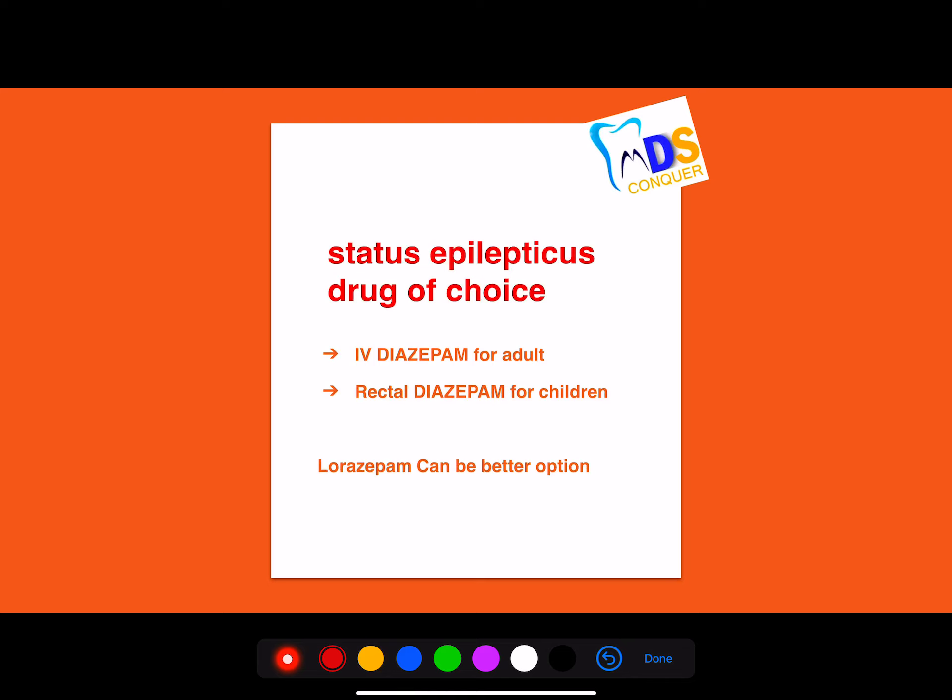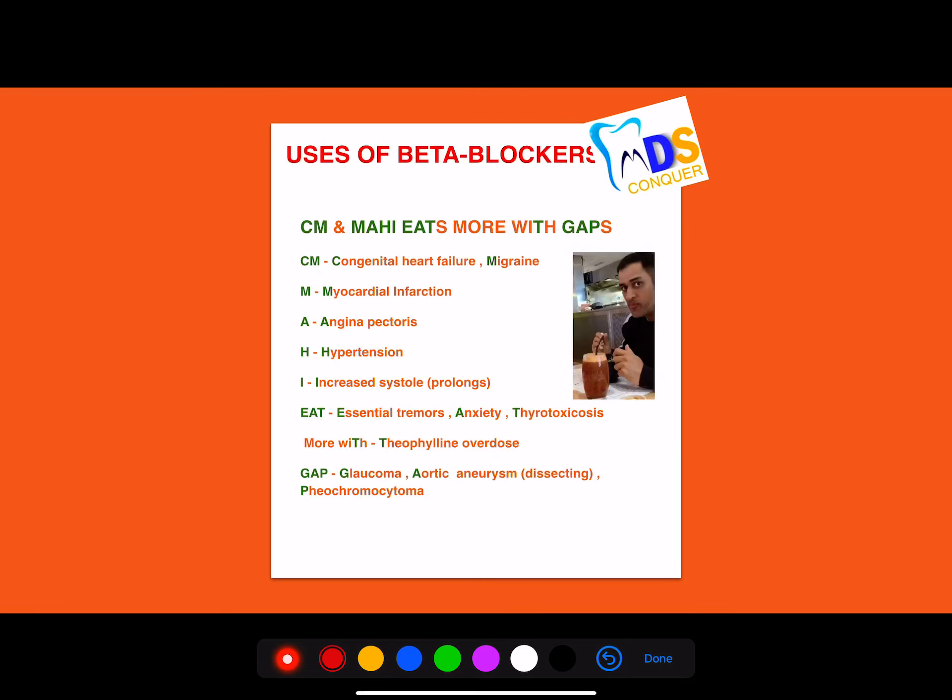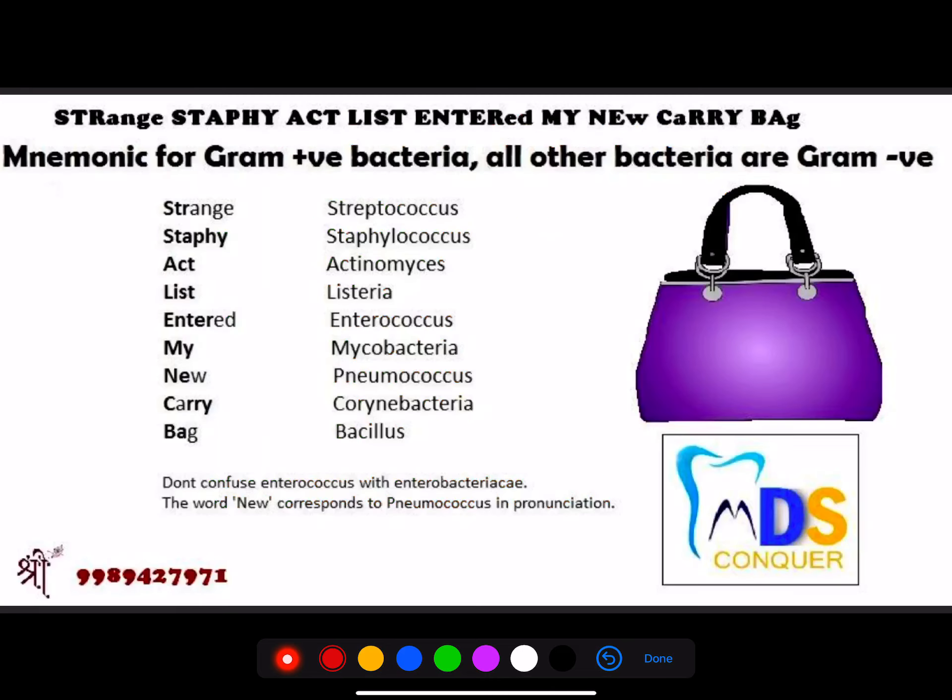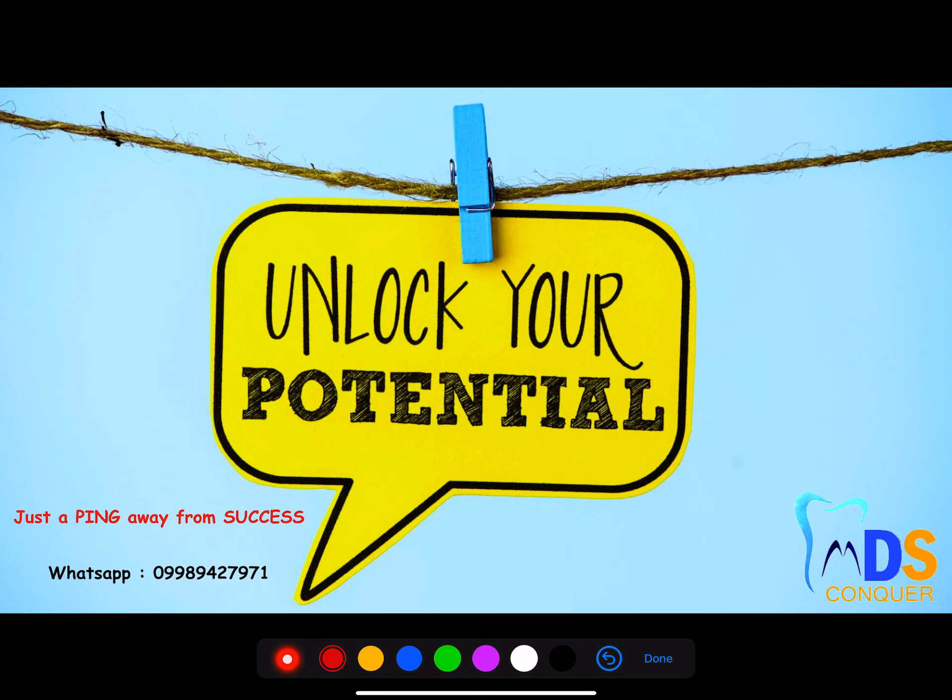What is the treatment for status epilepticus? What are the uses of beta blockers? You can remember this mnemonic. These are the uses of beta blockers. And mnemonic for gram positive bacteria. So this is the mnemonic for gram positive bacteria.